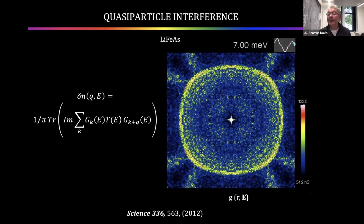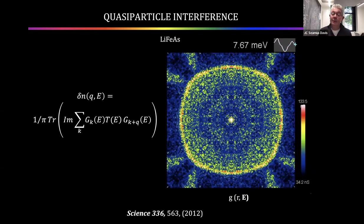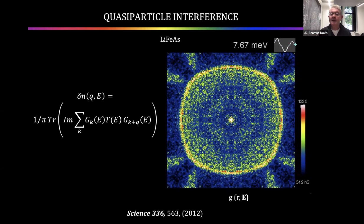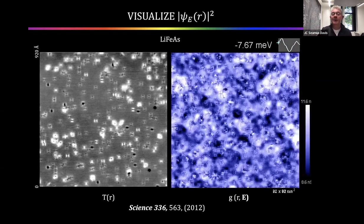I'm going to show you a lot of real-space images, but it's important to understand that with this technique you can simultaneously determine what's happening to the electrons when they're stuck in real space and what's happening to the electrons in momentum space. And that's the thing which begs the question that we needed machine learning to answer.